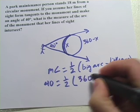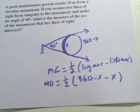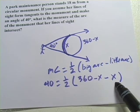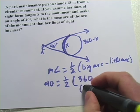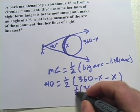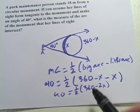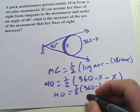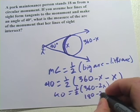And I end up with 360 minus x minus x. I can simplify that to 360 minus 2x. I've got to take one half of that and set it equal to 40. Well one half of 360 minus 2x is 180 minus 2x. That equals 40.